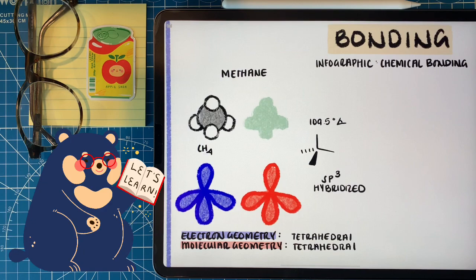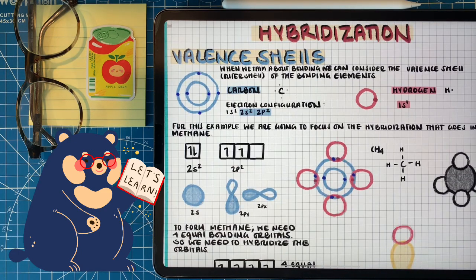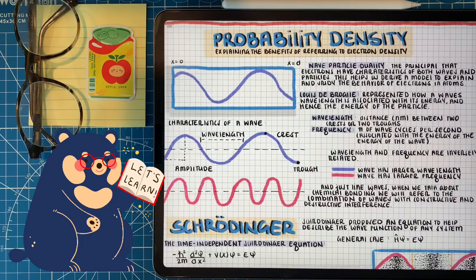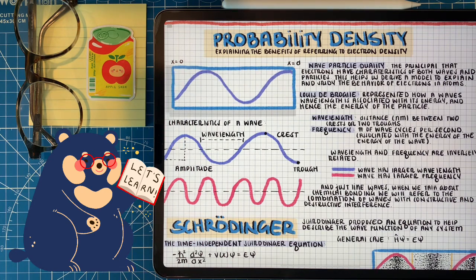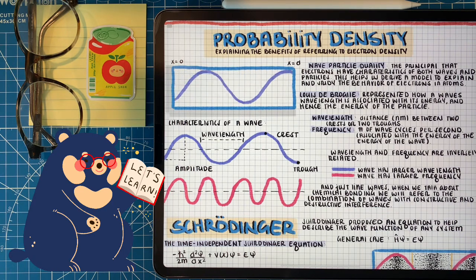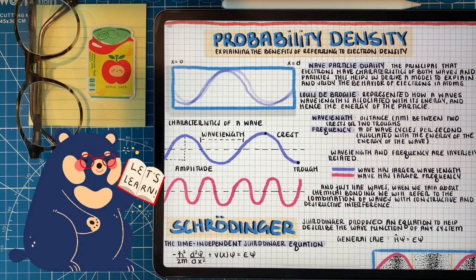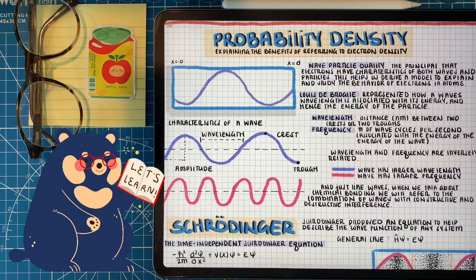Usually in organic chemistry we reference methane — one carbon and four hydrogens. To understand what's going on with the bonding between the hydrogens and the carbon, we have to talk about atomic orbitals, hybridization, and the VSEPR theory. To really understand the electrons in covalent bonding, we have to talk about the wave-particle duality principle — electrons act both as a wave and a particle. This will help us understand atomic orbitals and electron density, concepts we'll reference throughout organic chemistry.